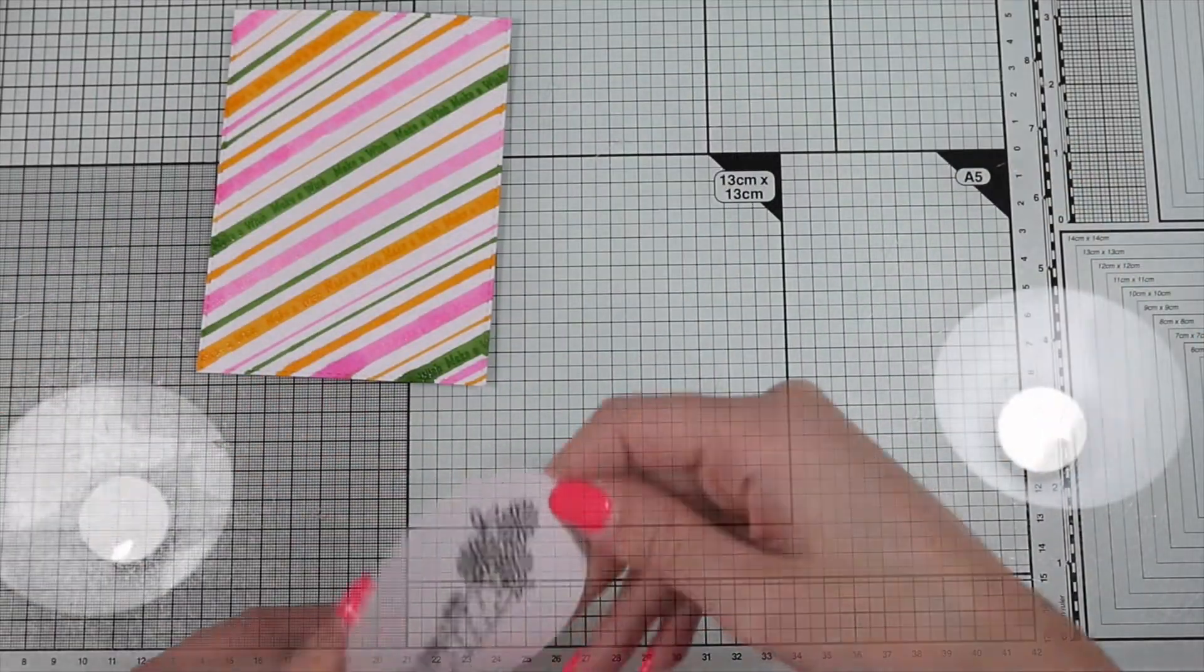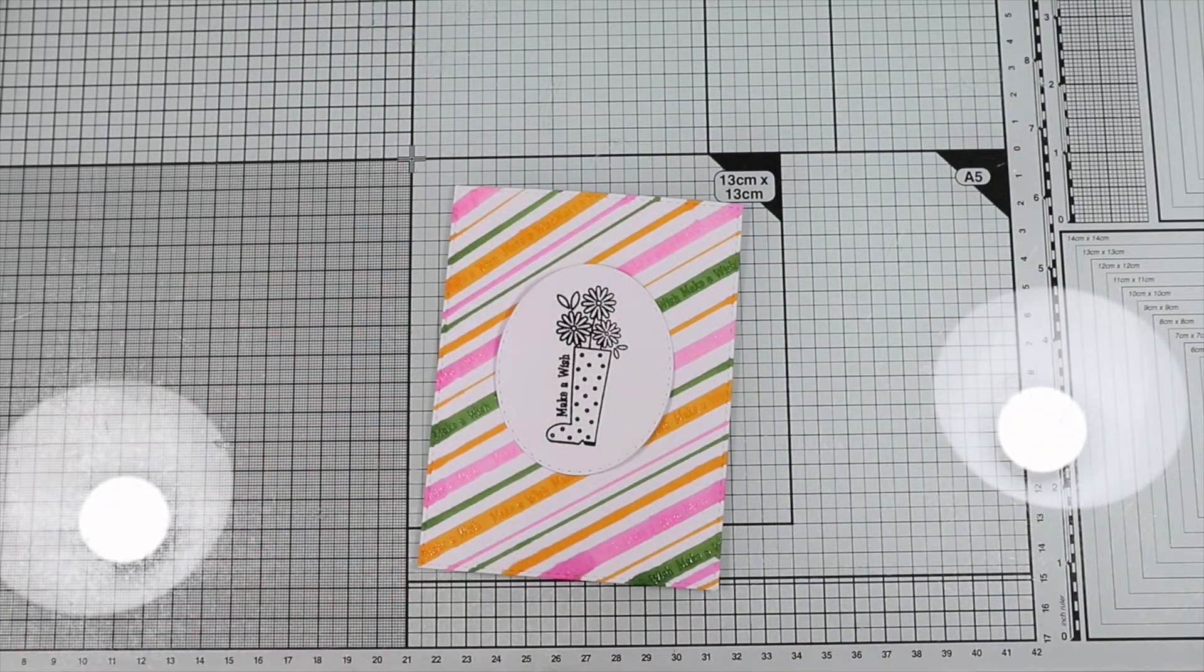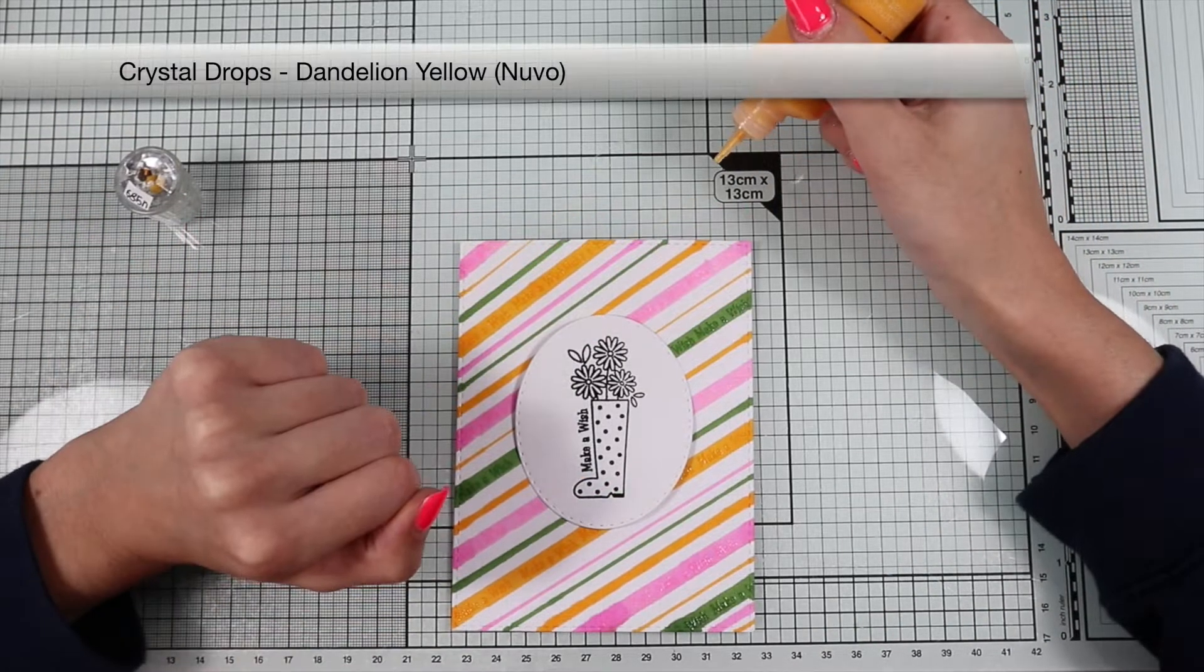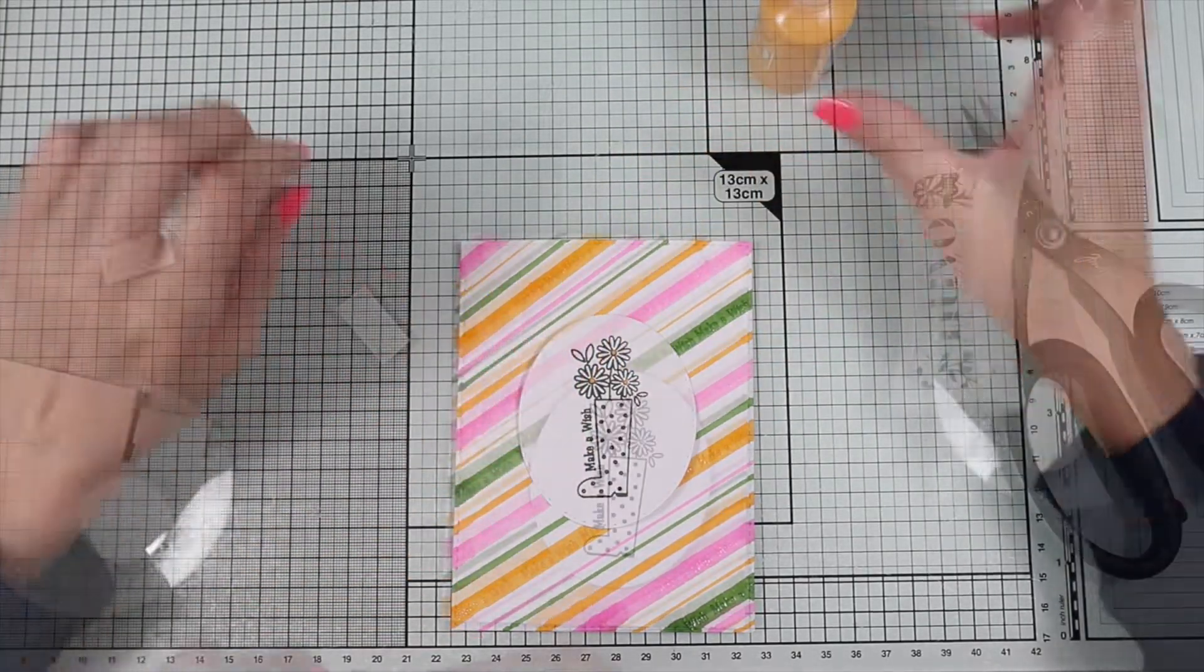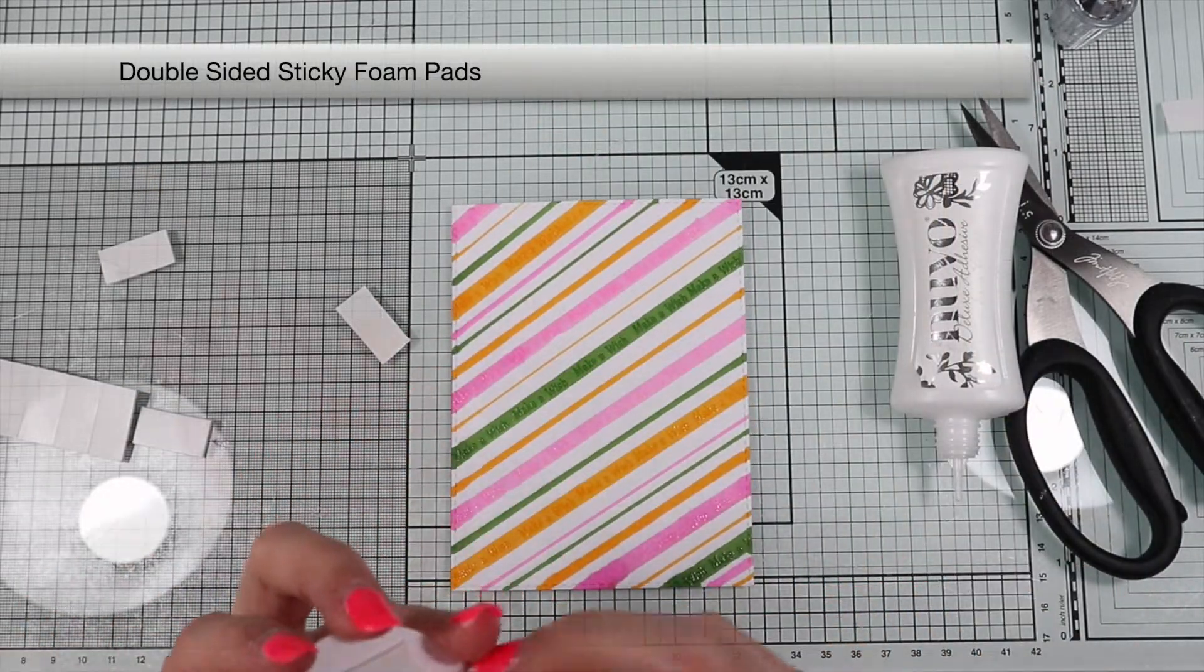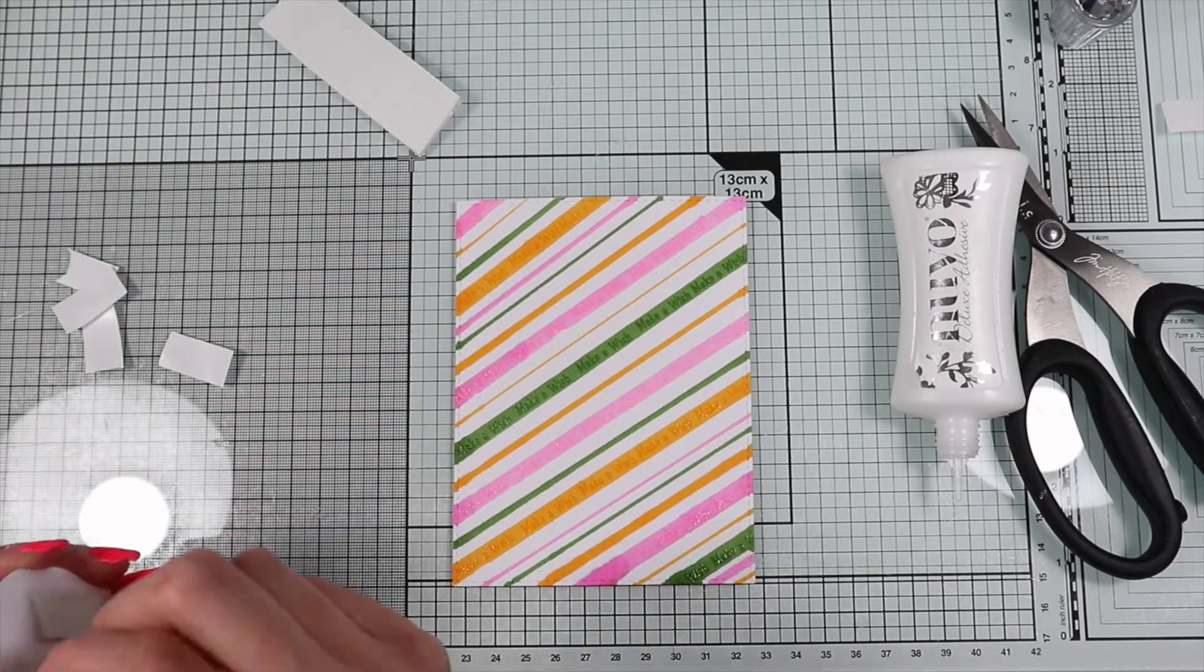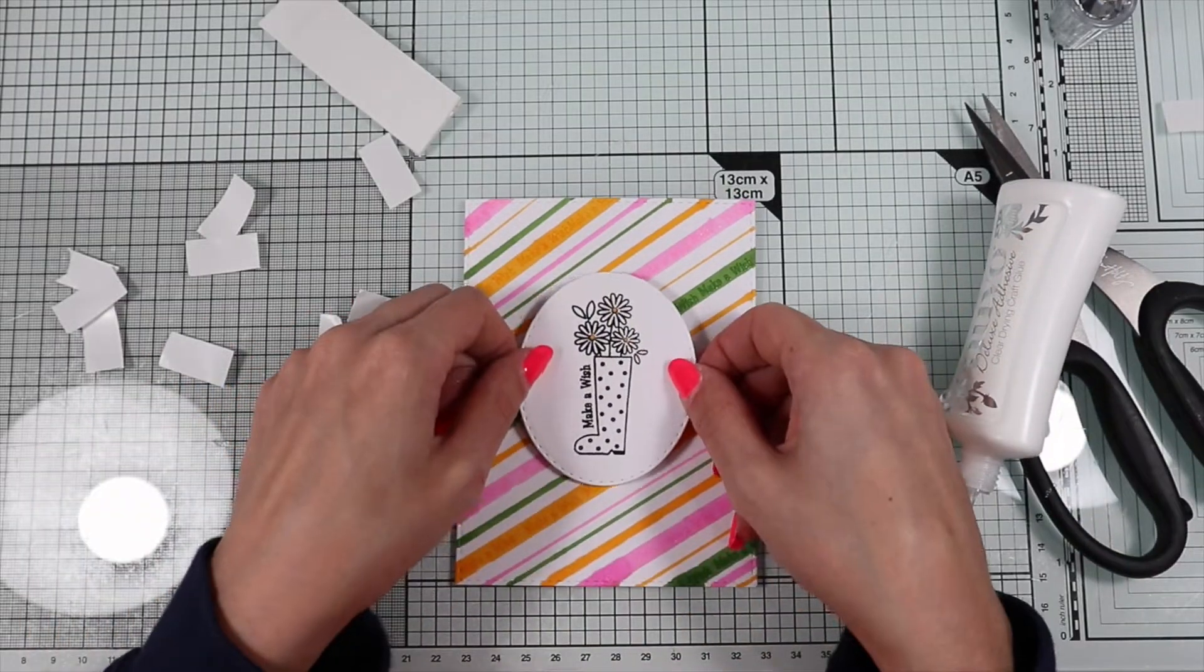And as you can see, the black and white stamp on a colored background looks great. One makes the other stand out. I just add a pop of color by creating the center of the flowers with a yellow crystal drop. I just have to glue the focal point on the background panel using some foam pads to give a nice dimension.